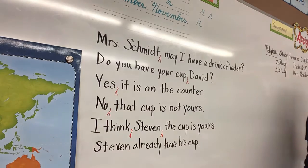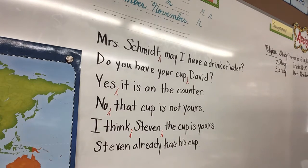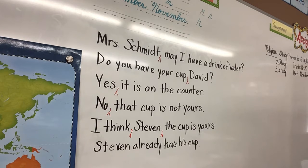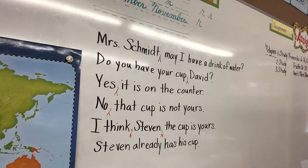All right, so you guys have a section on your paper where you're going to be doing that. So let's just do that section together. It says read the following sentences and use proofreader marks to add necessary commas. And you've got to add the end punctuation too.